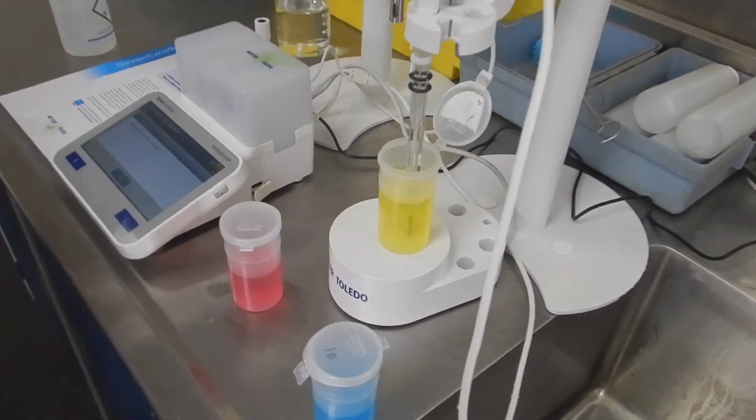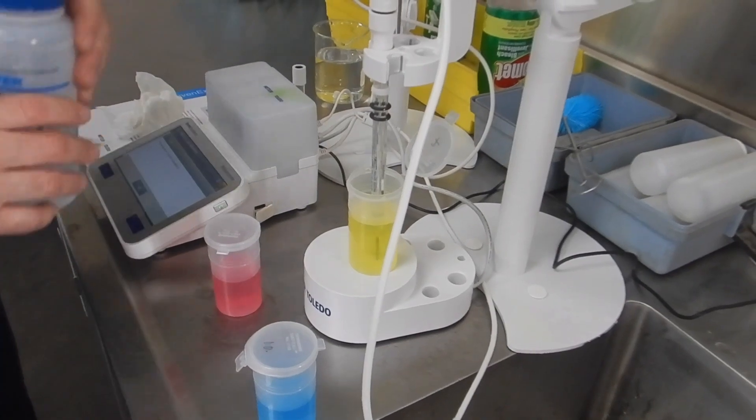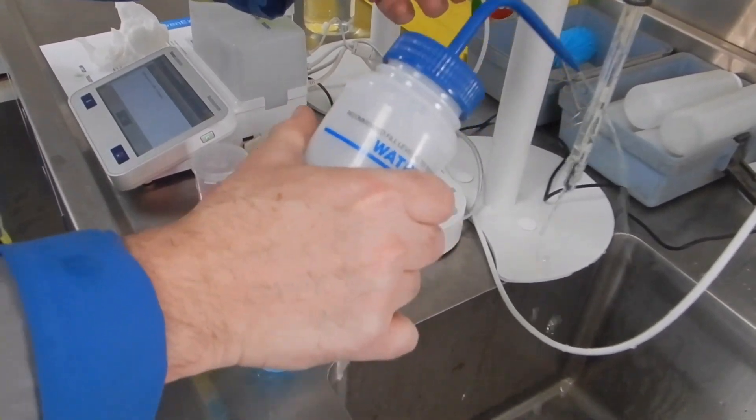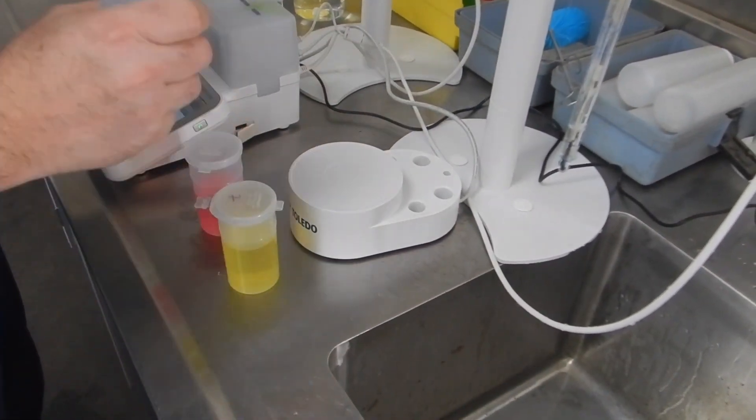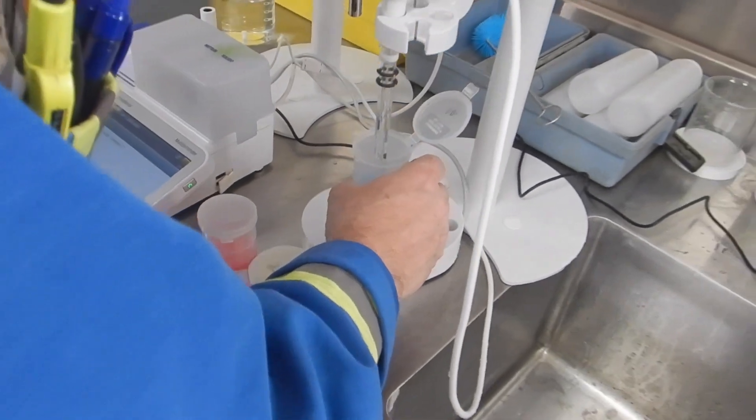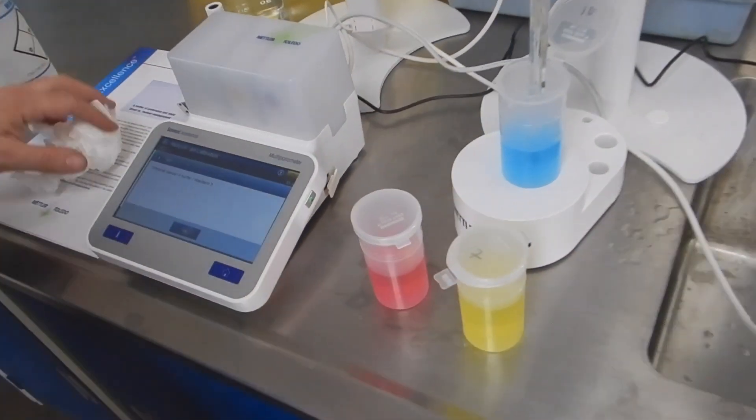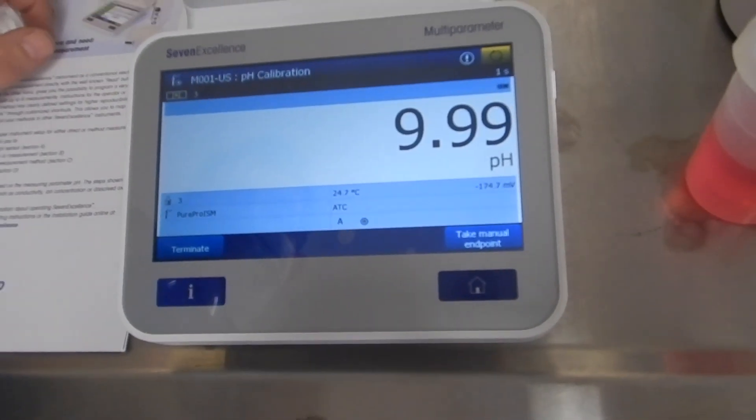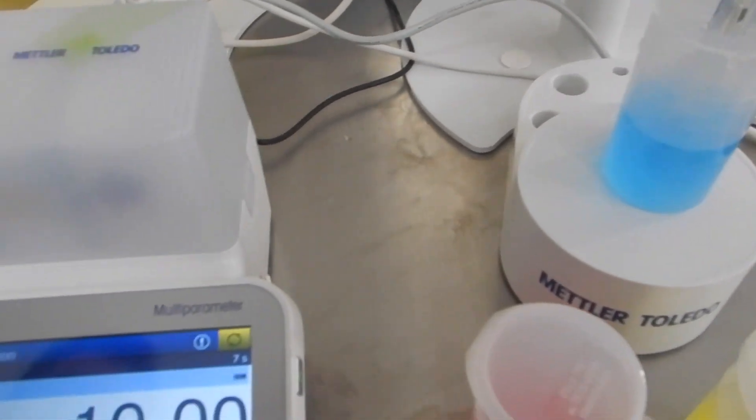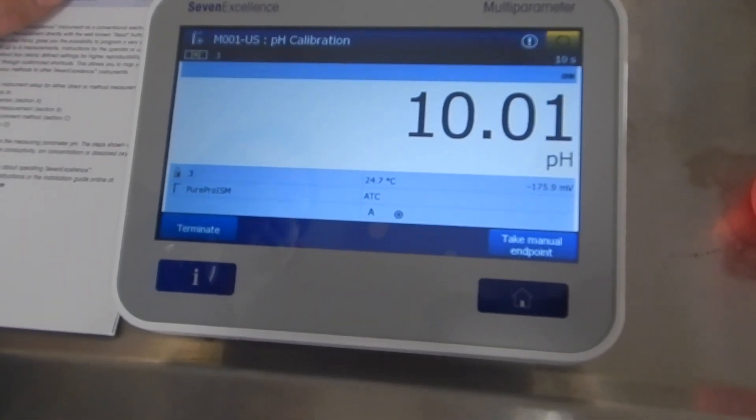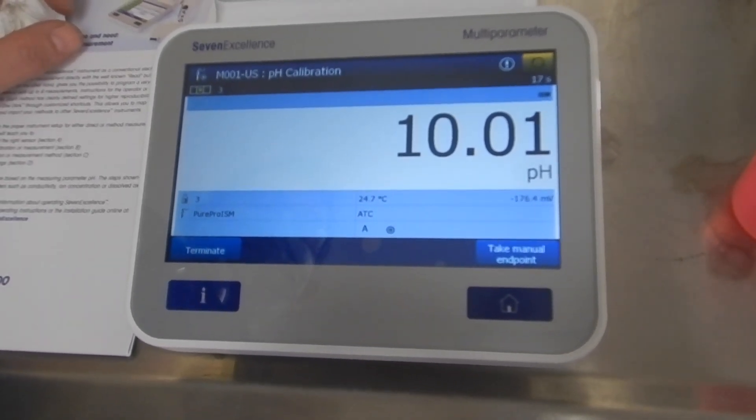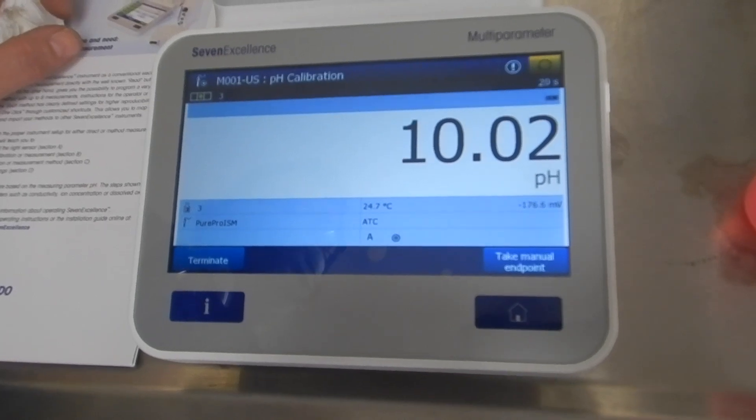Just rinse and repeat with the third buffer, or pH 10 in our case. Just remember, whenever you open up a fresh buffer of 10, it's slowly dropping in its value because when it comes in contact with carbon dioxide, the pH drops.